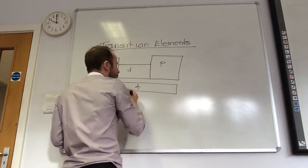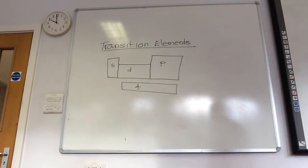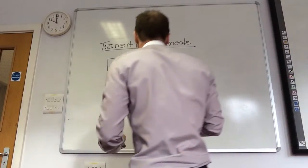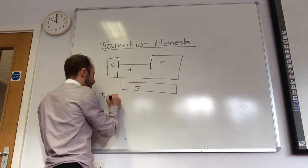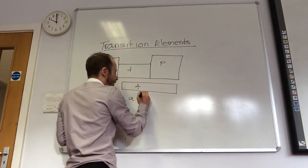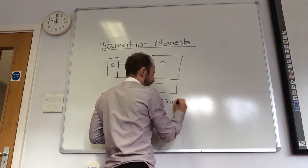And so, what makes an element a transition element? The key thing: it has to form an ion. So, to be in the gang, it has to be a transition element.